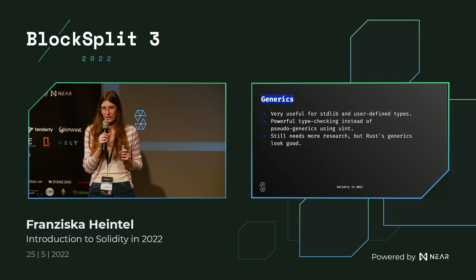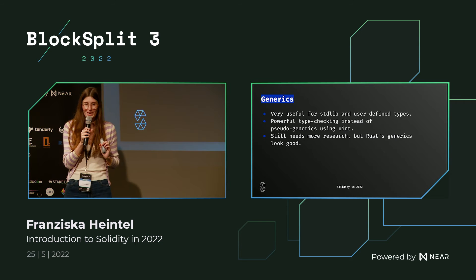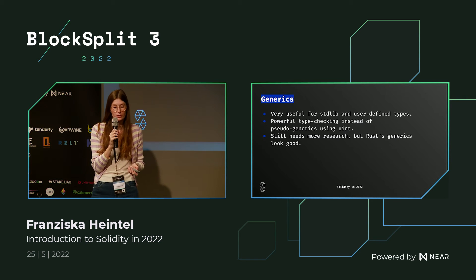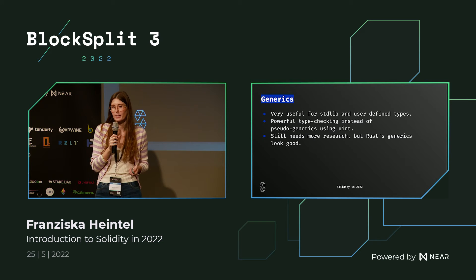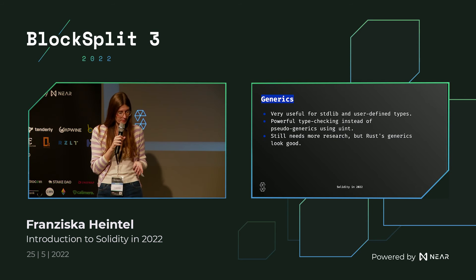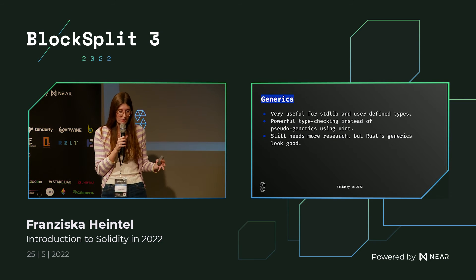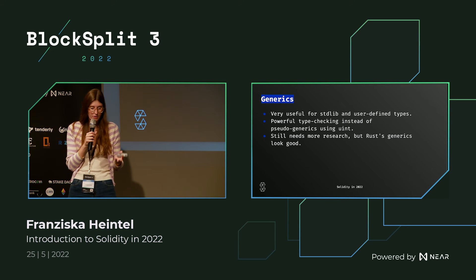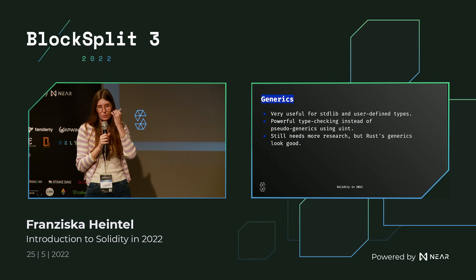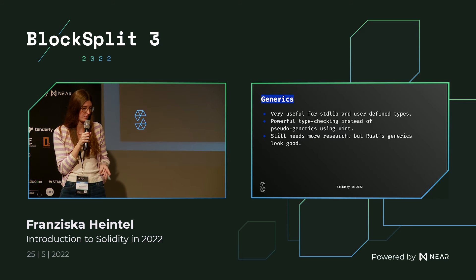That leads to another big requested feature: generics. Having generics would be very useful for the standard library and for user-defined types, and could lead to powerful type checking instead of pseudo-generics using uint. This topic still needs much more research, but we've been comparing it with Rust generics, which look good from an implementation perspective, so we will dive deeper there.